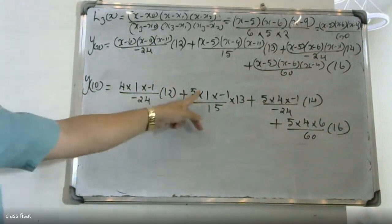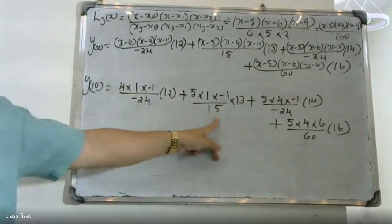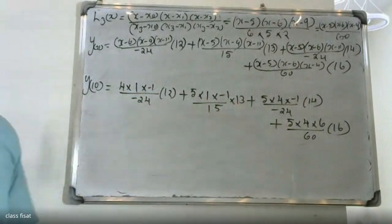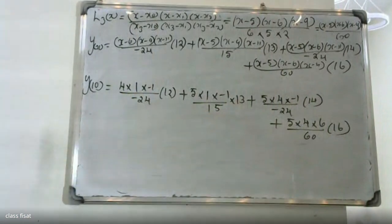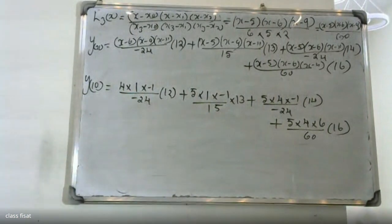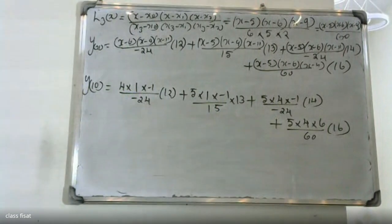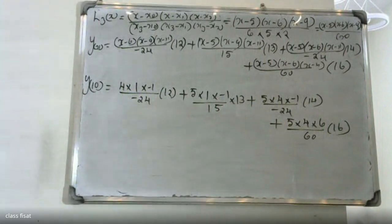Substituting the numerical values: 5 into 1 into minus 1, divided by 15, into 13; plus 5 into 4 into minus 1, divided by minus 24, into 14.